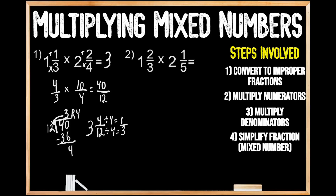So when we multiply 1 and 1 third times 2 and 2 fourths, we get the mixed number 3 and 1 third written in its lowest possible terms. Now we're going to move on to question number 2, where we're being asked to multiply the mixed numbers 1 and 2 thirds times 2 and 1 fifth. Remembering our first step is to convert these mixed numbers to improper fractions.